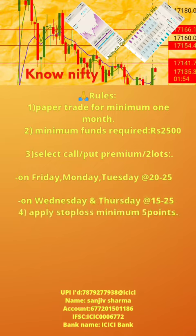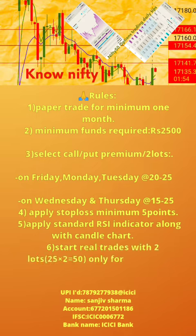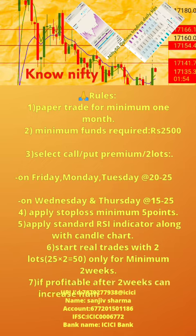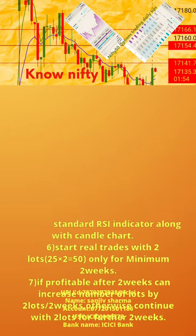4. Apply stop loss minimum 5 points. 5. Apply standard RSI indicator along with candle chart. 6. Start real trades with 2 lots — that is 25 per lot into 2 equals 50 — only for minimum 2 weeks. 7. If profitable after 2 weeks, increase number of lots by 2 lots every 2 weeks; otherwise continue with 2 lots for a further 2 weeks.